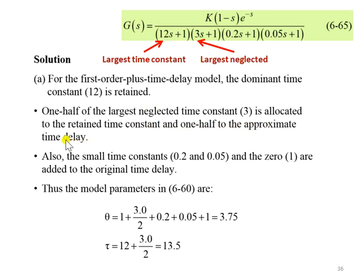Also, the small time constants 0.2 here and 0.05 here, and also the zero which has a value equivalent to 1 here, are added to the original time delay.